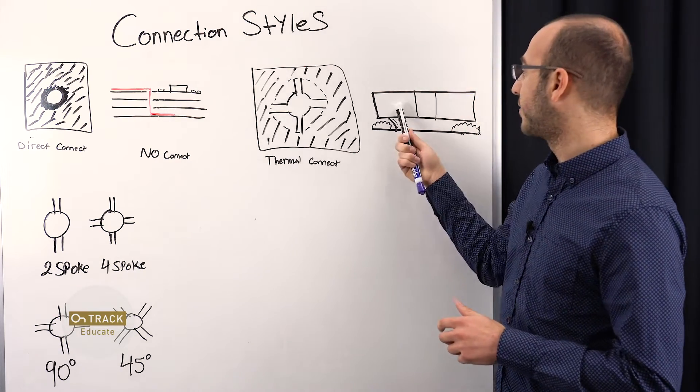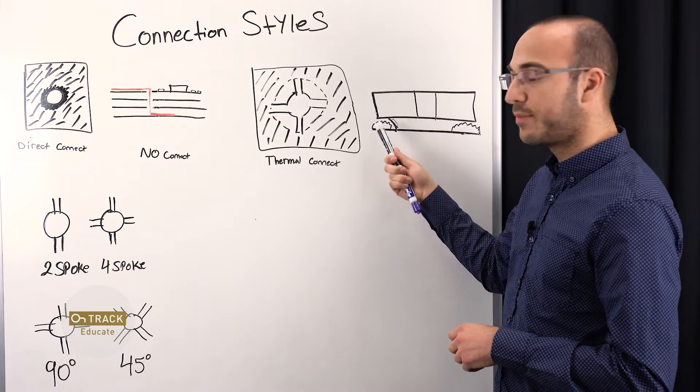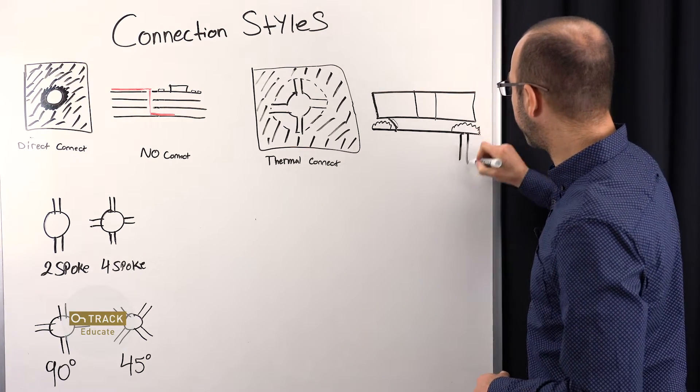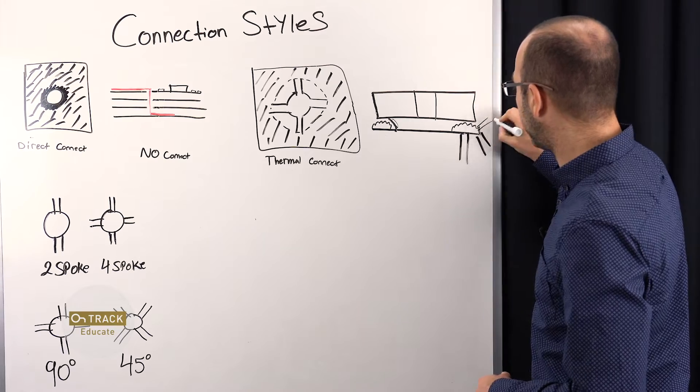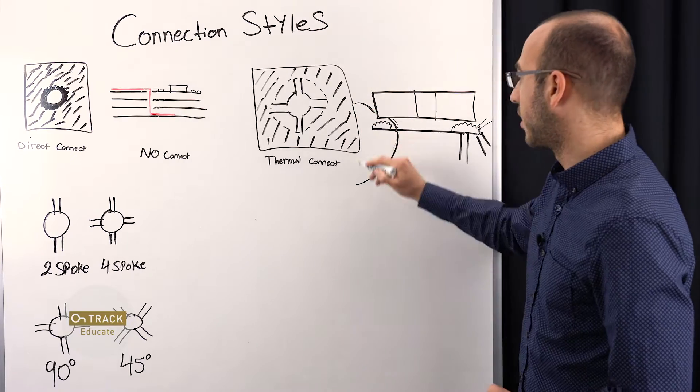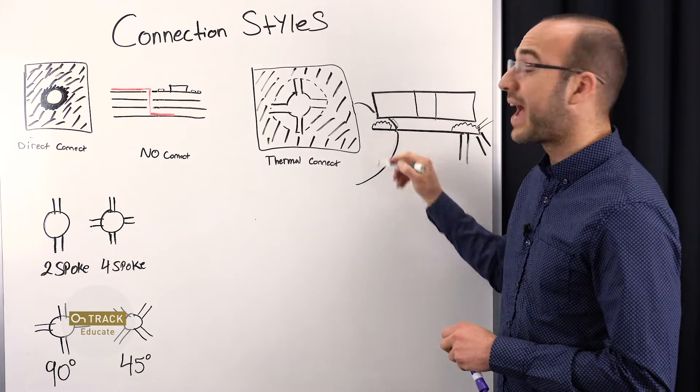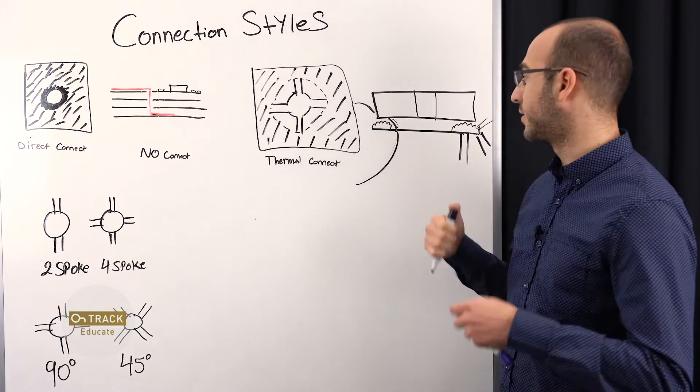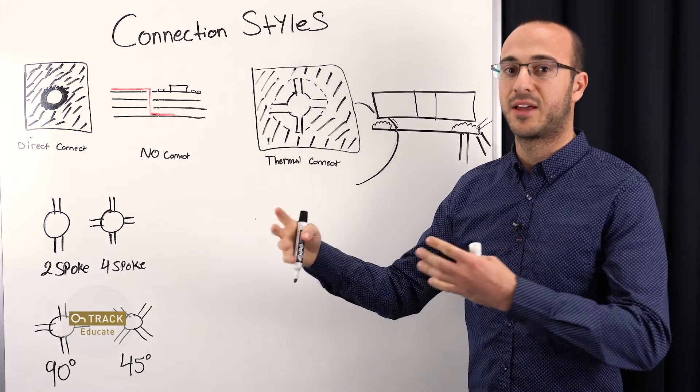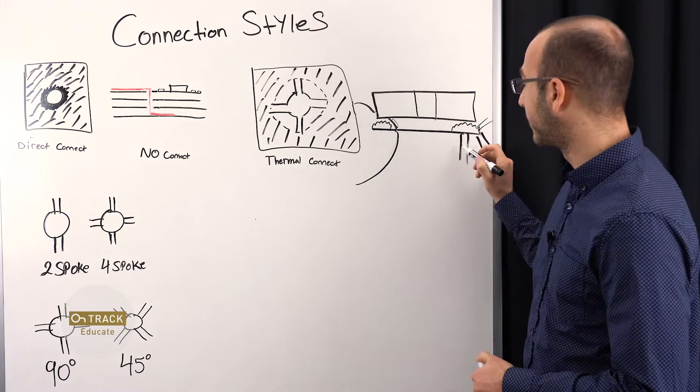So here we have a component. We have our solder paste on our pads, except this side is thermally connected and this side is connected to a large piece of copper. And being connected to a large piece of copper, or this pad is connected to a large piece of copper while this pad is thermally connected. And when this is connected to a large piece of copper, that means that the heat will be wicked away from that pad much more quickly than this side.